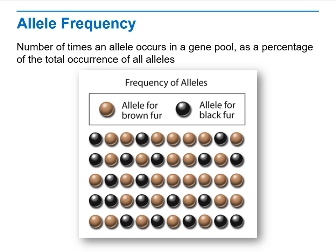When we talk about the number of times an allele occurs in a gene pool — the gene pool meaning different genes in a specific place — it is expressed as a percentage of the total occurrences of all alleles. For example, the allele for brown hair and the allele for black hair: we compare the frequency of the brown allele to the black allele.